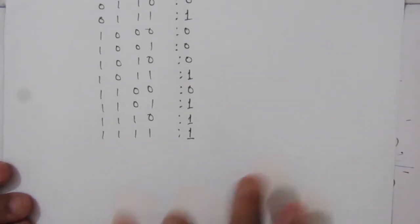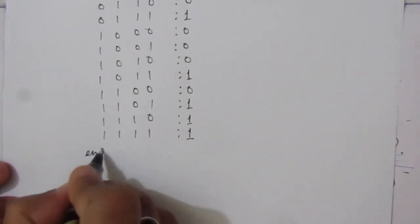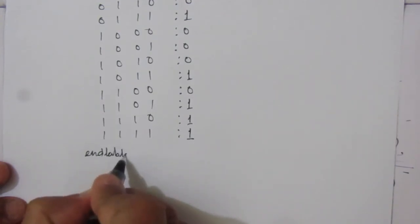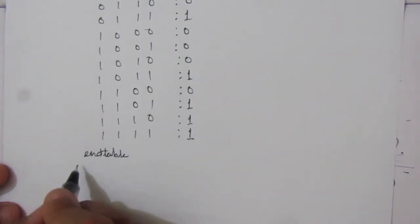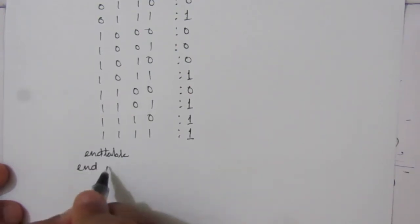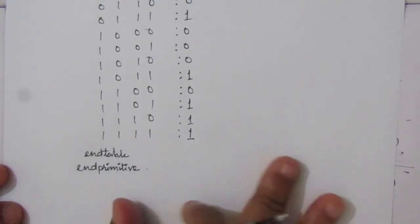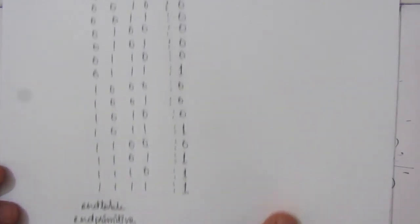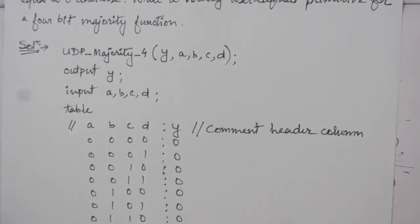We end the table with 'endtable' — that is a single keyword. Then we write 'endprimitive' to close the UDP. So this is the complete Verilog User Defined Primitive for a 4-bit majority function. Thank you for watching.